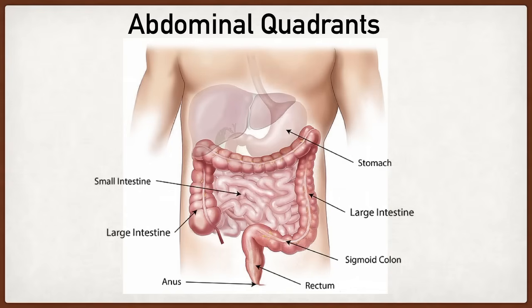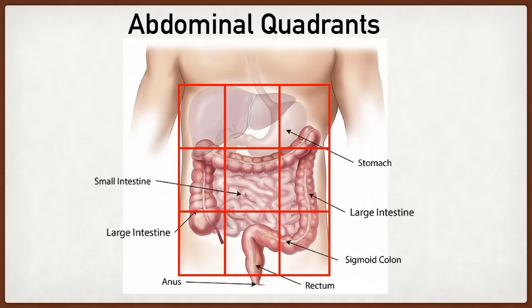Here we have a basic image of the abdomen, which mainly shows the GI tract or the digestive system. How you're going to break up the abdomen is by drawing a three by three grid, giving you nine different quadrants. By breaking up the abdomen like this it will help you differentiate what's causing the abdominal pain. Each of these quadrants have different names, so we're going to walk through them right now.